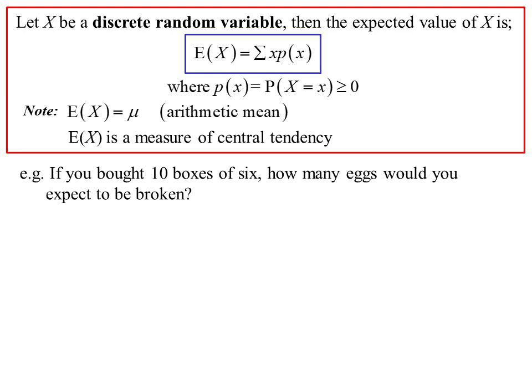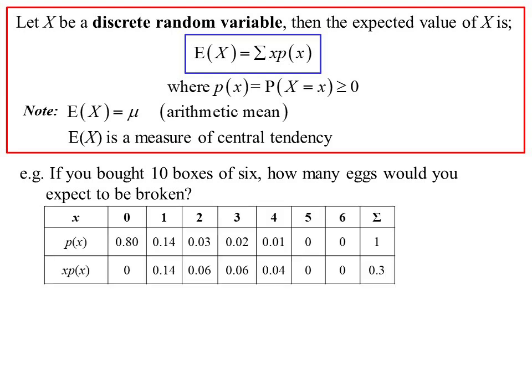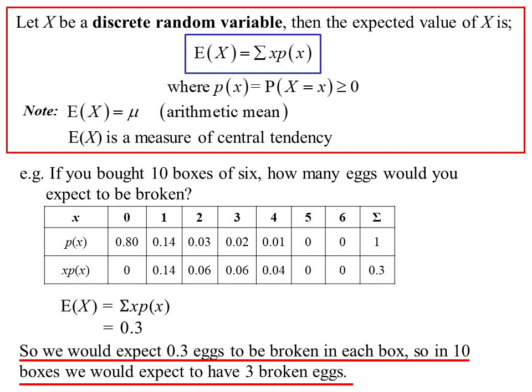How many eggs would you expect to be broken? We add the x·p(x) row to work out the expected value. It sums to 0.3. We're expecting 0.3 eggs broken in every box. You can't have 0.3 of an egg broken, but if we're buying 10 boxes with 0.3 in each, we'd expect 3 broken eggs overall.